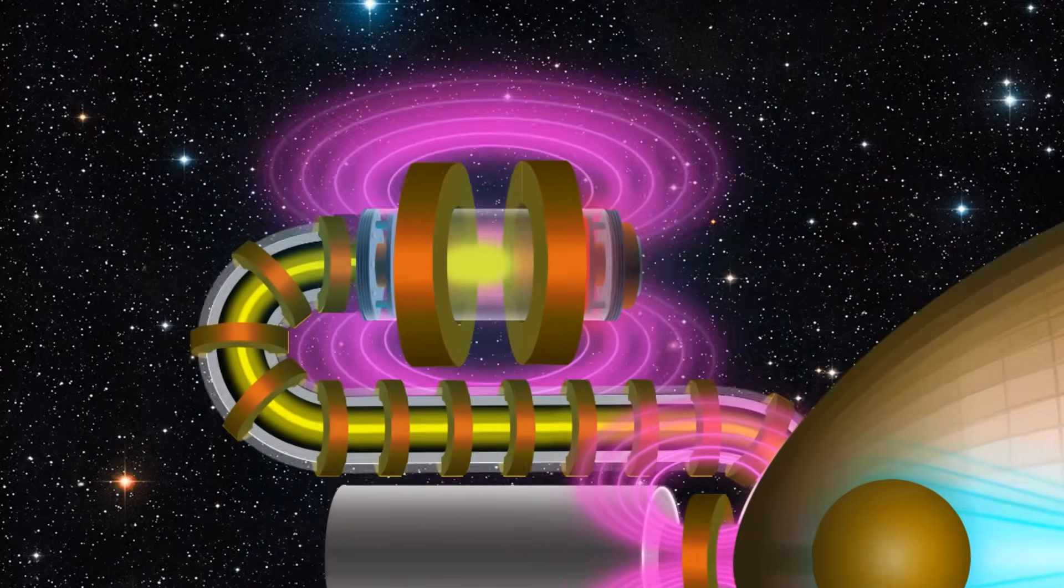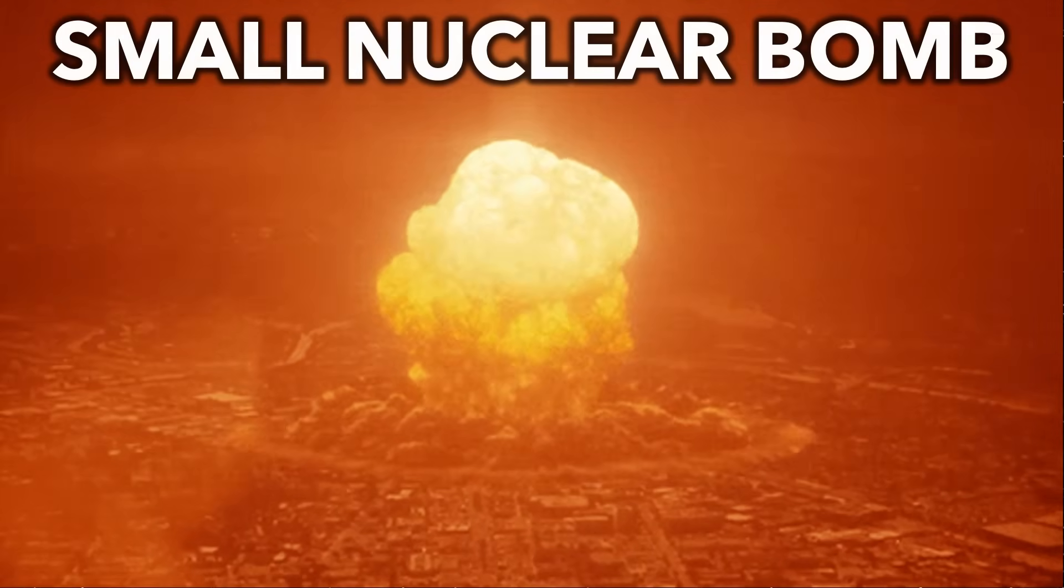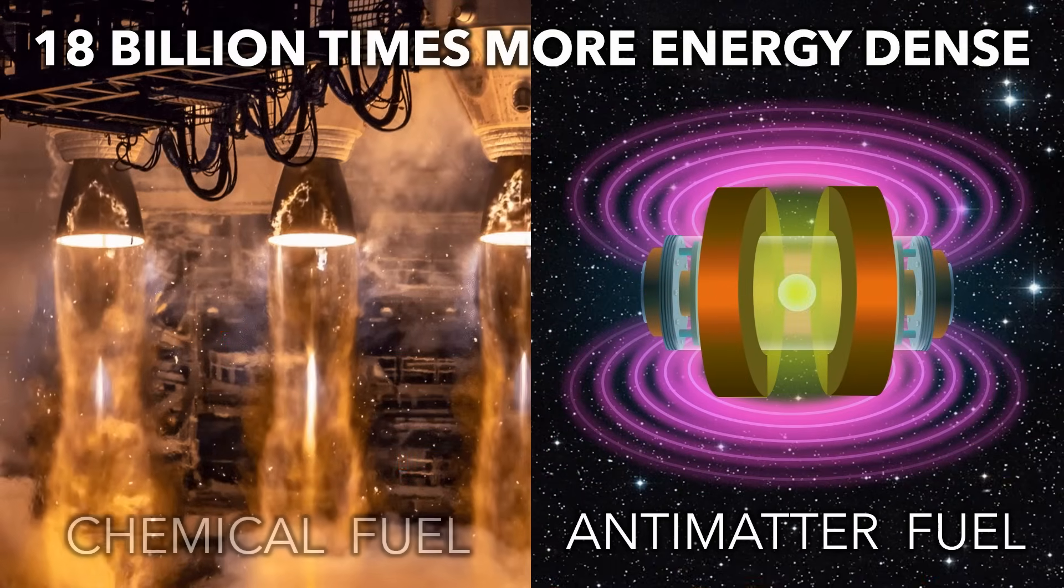Before you learn how it works, why use antimatter? Just half a gram of antimatter can store the energy of the Hiroshima nuclear bomb, 18 billion times more energy than chemical rocket fuel.